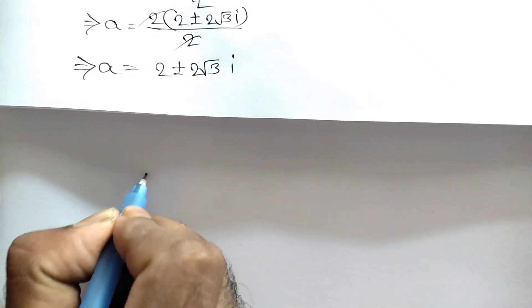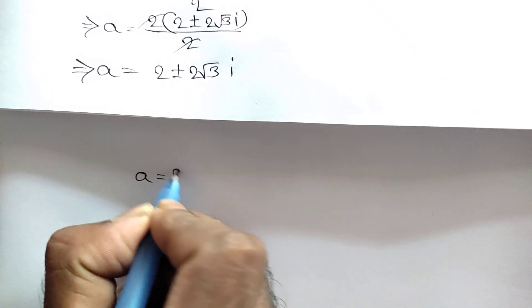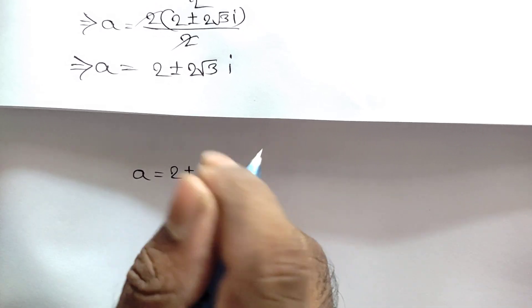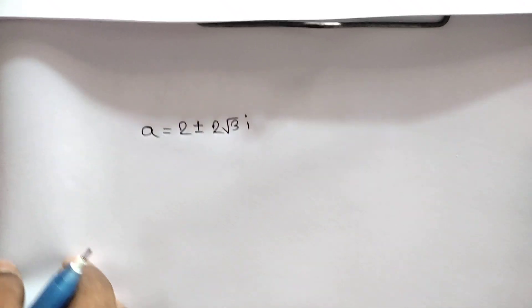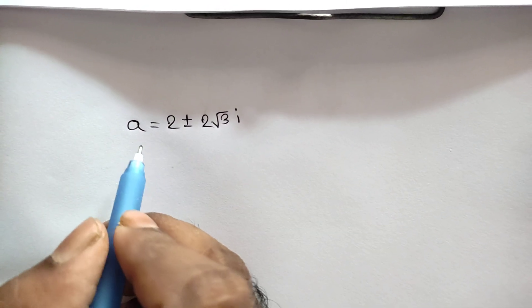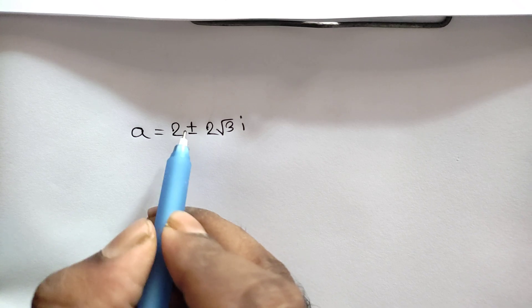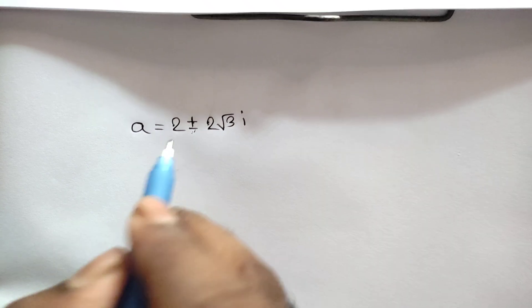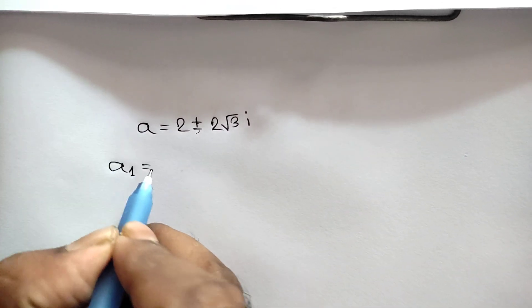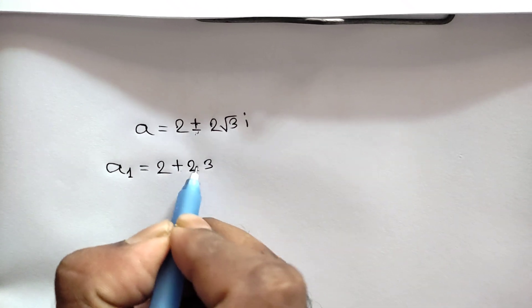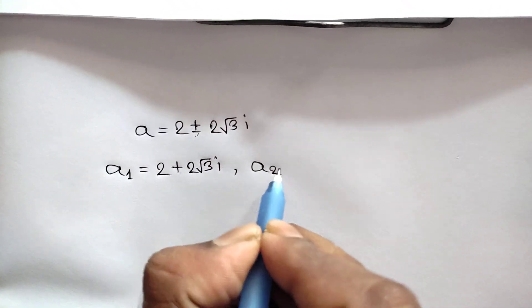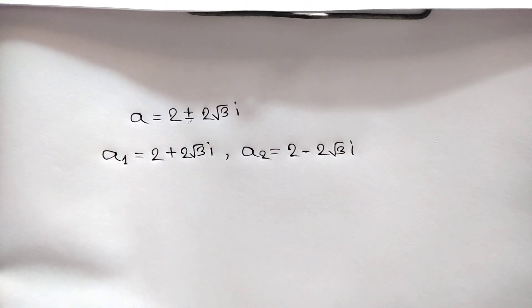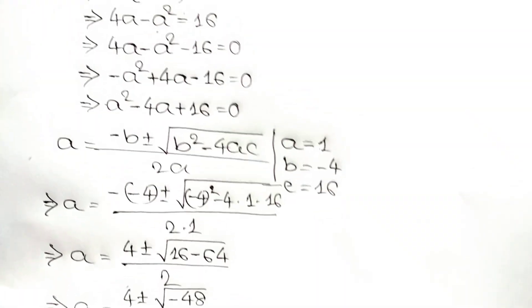So a equals 2 plus or minus 2 times square root of 3 times i. There are two values of a: a₁ equals 2 plus 2√3·i, and a₂ equals 2 minus 2√3·i.